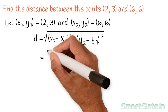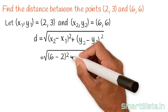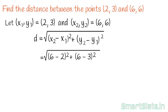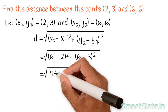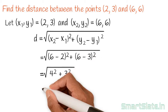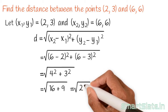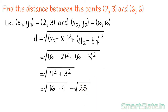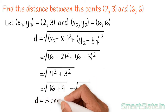It is square root of (6 minus 2) squared plus (6 minus 3) squared. 6 minus 2 is 4 and 6 minus 3 is 3. It is square root of 4 squared plus 3 squared, which is square root of 16 plus 9, which equals square root of 25. So the distance d is equal to 5 units.